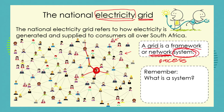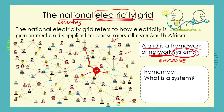And not just in your town or city or amongst your friends — it's national, meaning the whole country. It's like the whole country working on Facebook or Twitter. Everybody is part of the network, but this network is not about spreading information — it's about making and spreading electricity. So the national electricity grid refers to how electricity is generated, meaning how it's made, and how it is supplied or distributed to consumers all over South Africa.